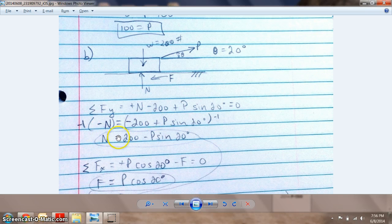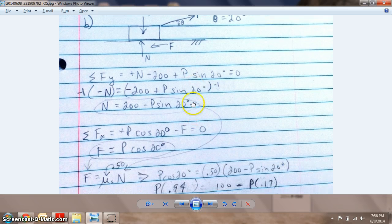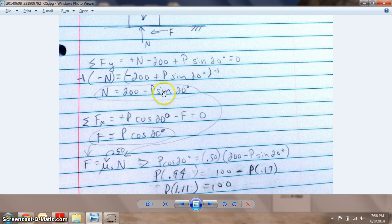Then we can solve for N. When you do that, you'll find that N is, you can't really solve it any more simply than this, you get basically another formula. So we know N is equal to this formula here, so it's 200 minus P times the sine of 20.